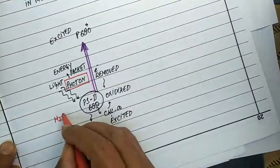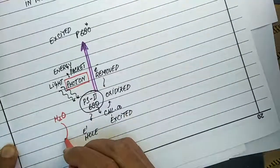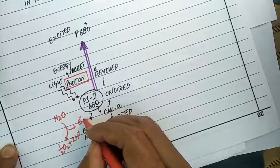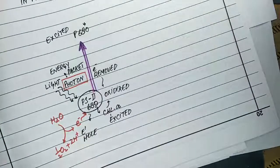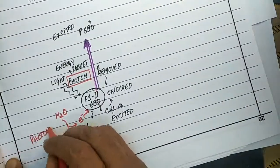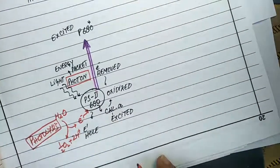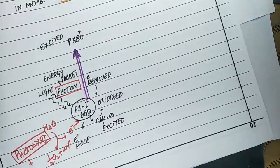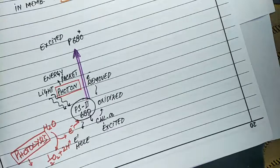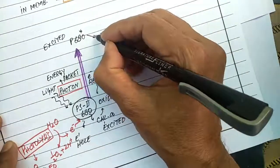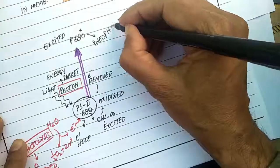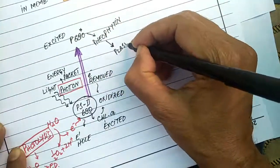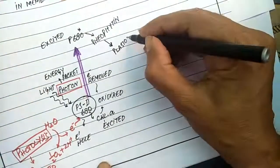Its electron hole is filled by the splitting of water. Chlorophyll molecules at P680 are reduced by obtaining electrons from water, and water is oxidized. This process of water oxidation is called photolysis. The electrons from excited chlorophyll A molecules are then transferred to pheophytin, then to plastoquinone, and from plastoquinone these electrons are transferred to cytochrome BF complex.